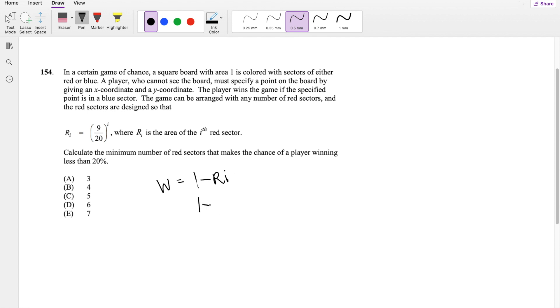This is the same thing as saying 9 over 20 plus the probability when I equals 2, which would be 9 over 20 squared plus 9 over 20 cubed, so on and so on, until 9 over 20 to the N.